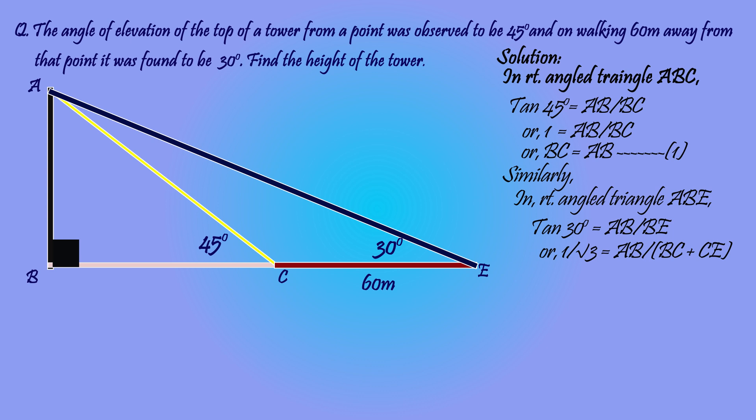Now doing cross multiplication we get BC plus CE equals root 3 AB, or AB plus 60 meters equals root 3 AB, as from equation 1 BC equals AB and the value of CE is 60 meters.